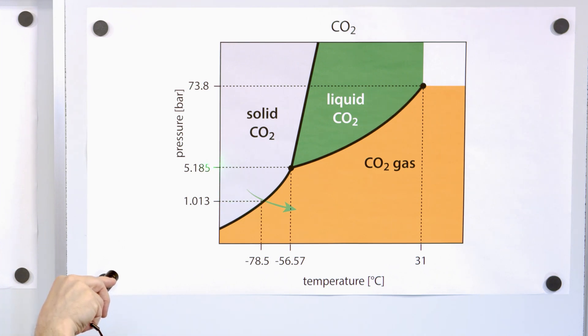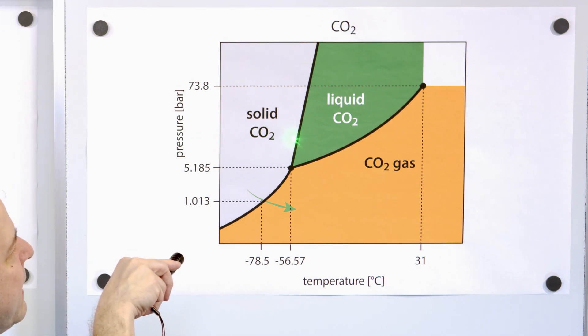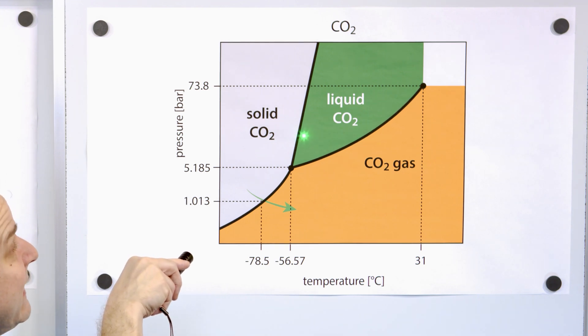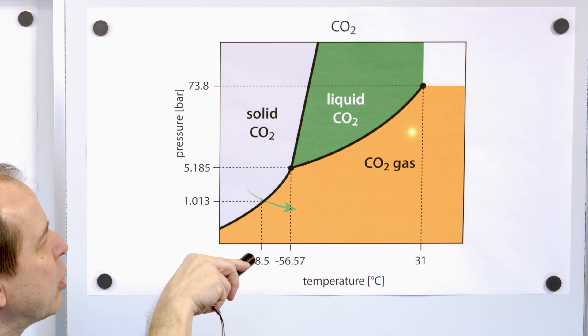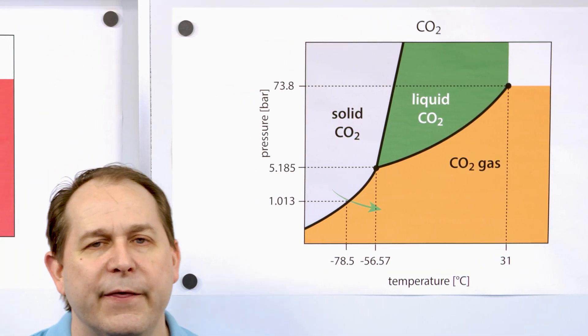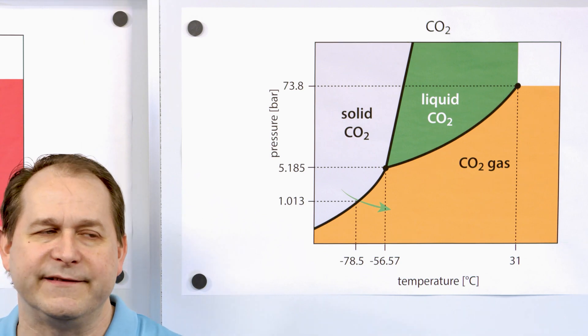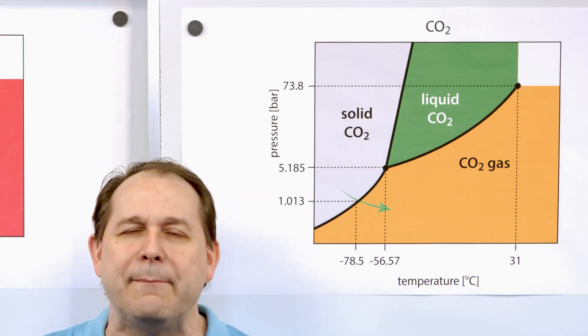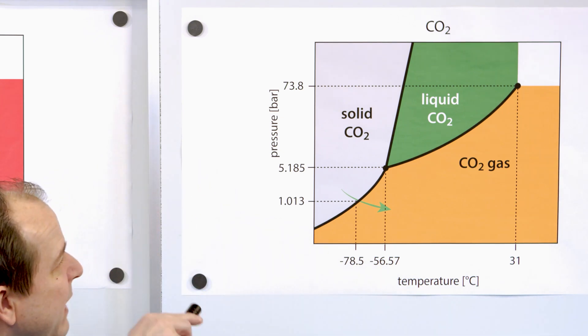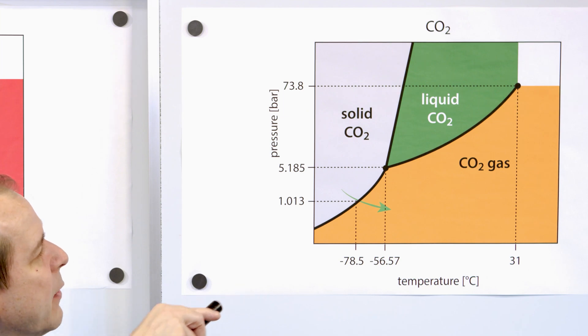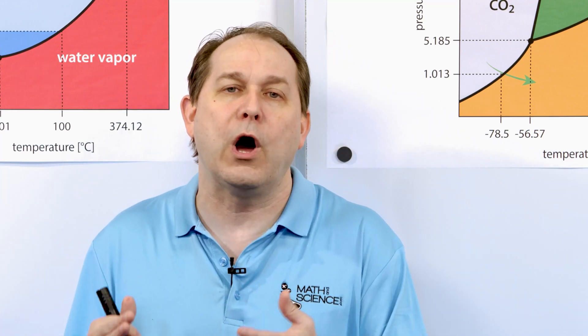At atmospheric pressure, CO₂ goes straight to gas. But if we increase the pressure up past five, six, or seven atmospheres, then we would still have solid carbon dioxide, but once it reached its melting point it would go to carbon dioxide liquid, and then continue heating to carbon dioxide gas. So solid, liquid, gas does exist for carbon dioxide — but at a much higher pressure. The things we take for granted as three phases of matter are really only relevant because we happen to live on a planet at this pressure.